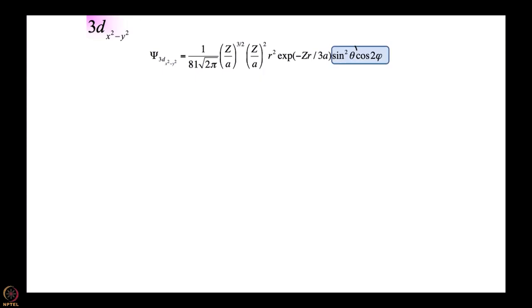Let us have a look at the angular part of 3d x²-y². What we have there is sin²θ multiplied by cos 2φ. So what is cos 2φ? Cos 2φ is essentially cos²φ minus sin²φ.